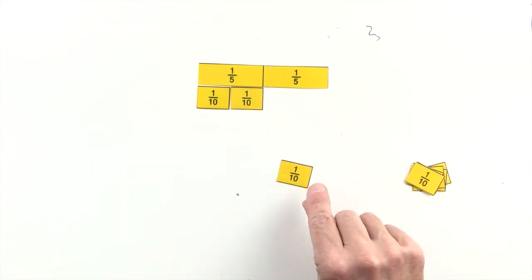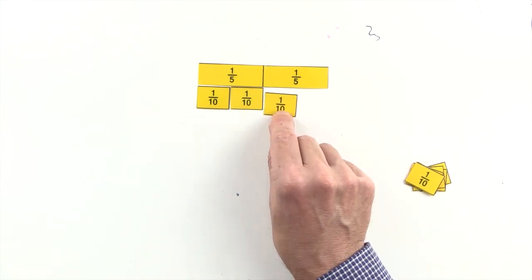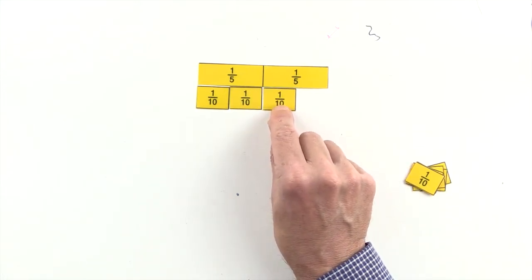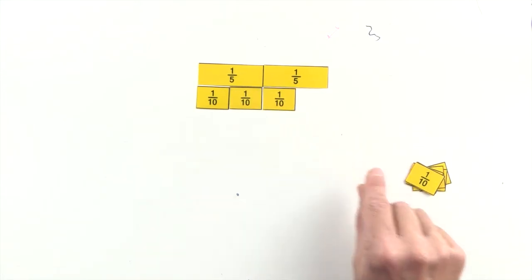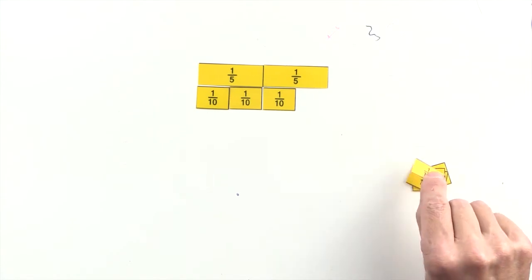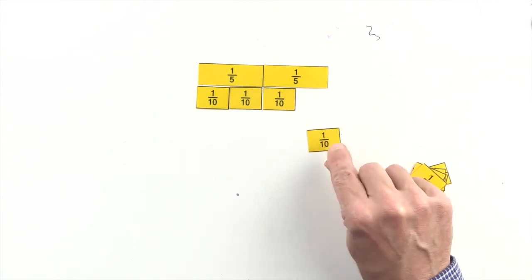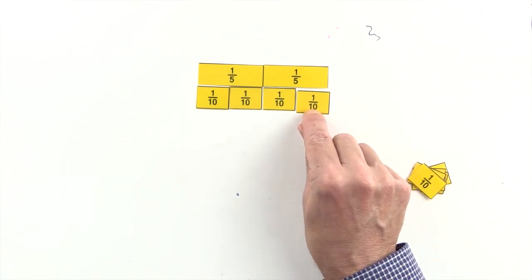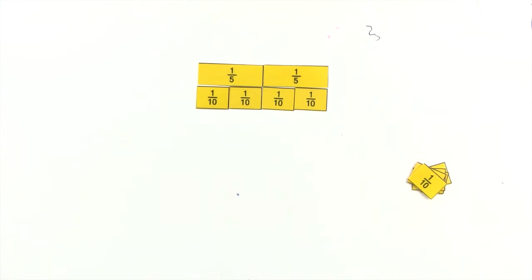Three-ninths are less than two-fifths, but four-ninths are equal to two-fifths, so four-ninths and two-fifths are equivalent fractions.